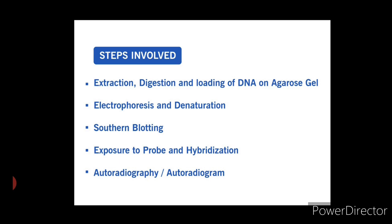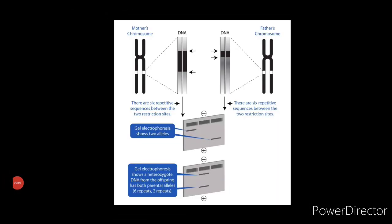The various steps involved in this technique are: first extraction, digestion and loading of DNA on agarose gel; second electrophoresis and denaturation; third southern blotting; fourth exposure to probe and hybridization; and fifth autoradiography or autoradiogram. Now let us understand each and every step in detail.